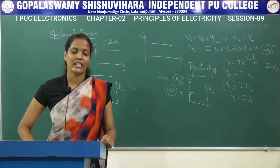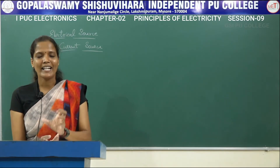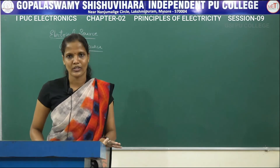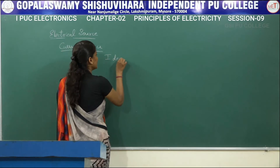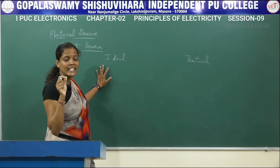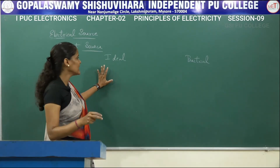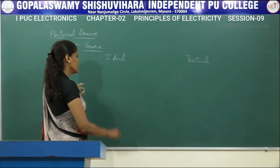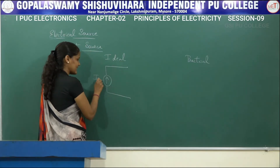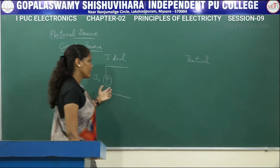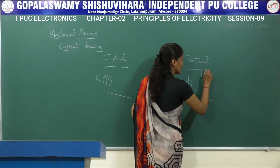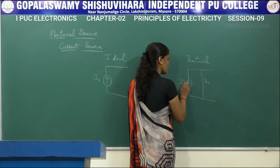Now we will see the next type of source: the current source. A current source is a device which provides current to the circuit or to the load. Just as with voltage sources, we have an ideal current source and a practical current source. In a voltage source, the internal resistance is in series with the source. But here, in a current source, the internal resistance will be in parallel to the current source, denoted by IS.